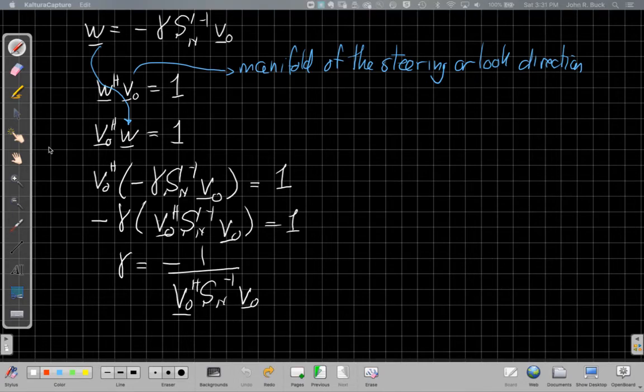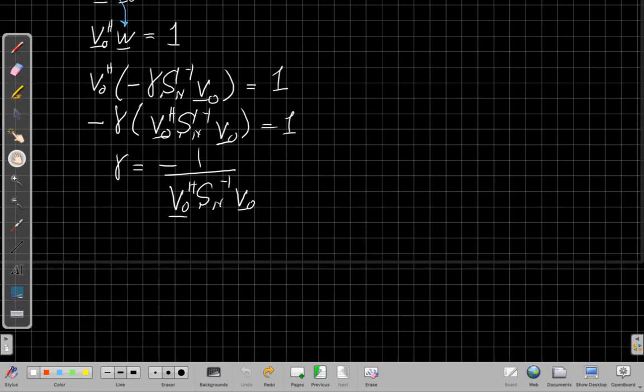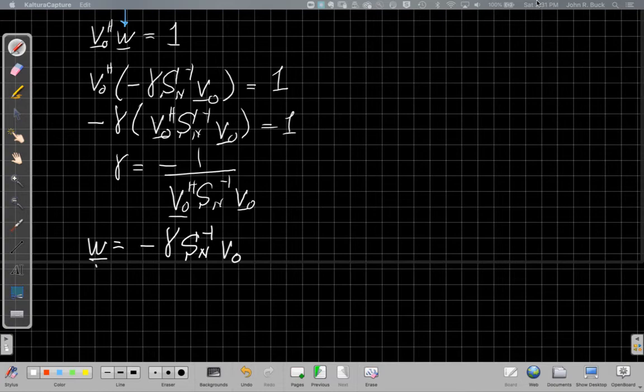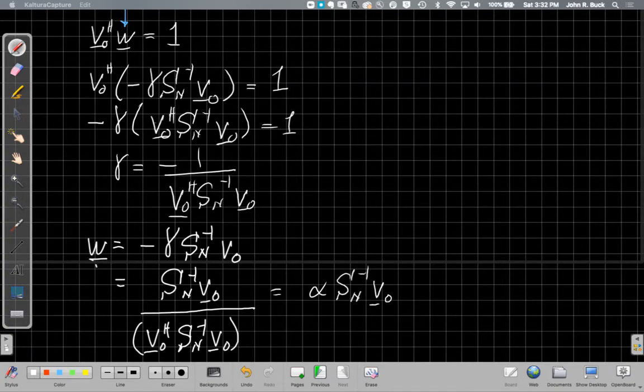Oh, I need to make myself a little more space to write here. Let me scoot up a little bit. And now when I plug that in, well, again, I'm plugging into here for gamma, and what I get looks like this. We end up with this SN spatial covariance noise inverse times V naught divided by V naught SN inverse V naught. And we often write it this way just by representing this denominator is just a constant scaling factor. So the numerator tells us about the relative magnitudes and phases. Remember, everything in beamforming, especially narrowband beamforming, is about how I'm going to scale each element and how I'm going to phase or shift it relative to the others.